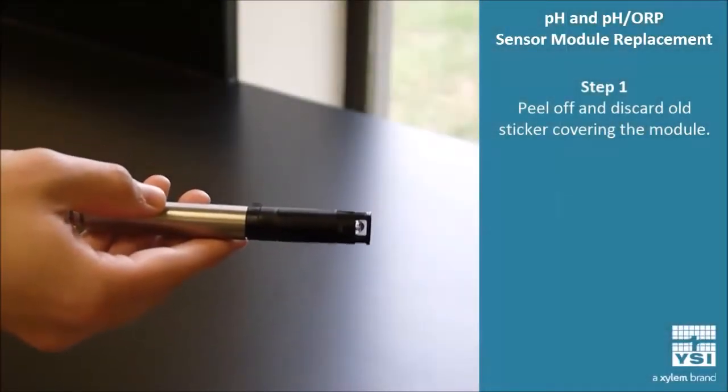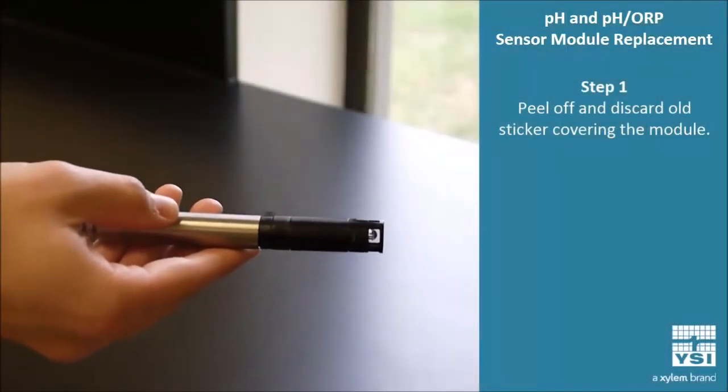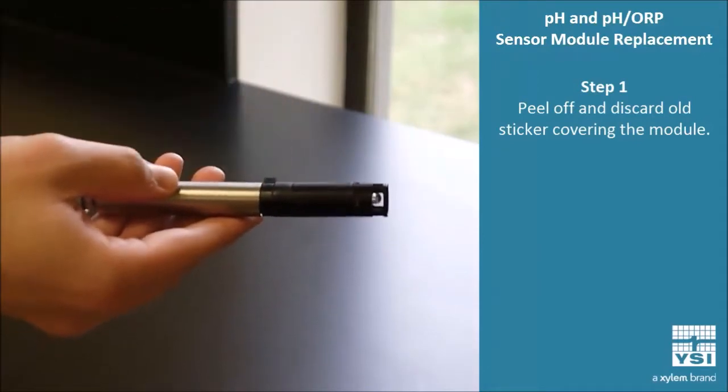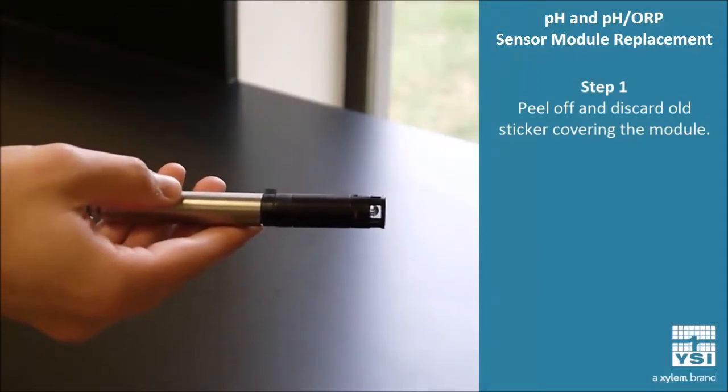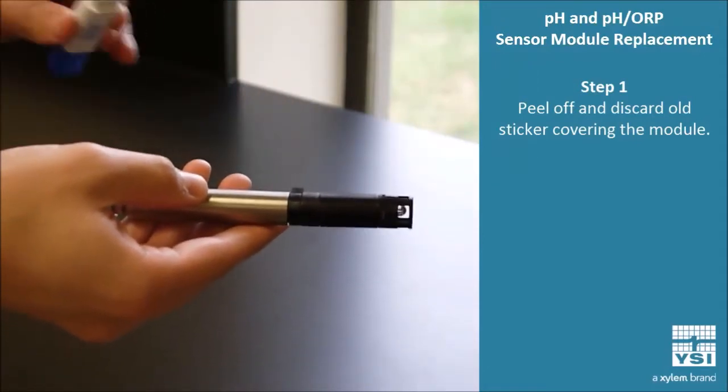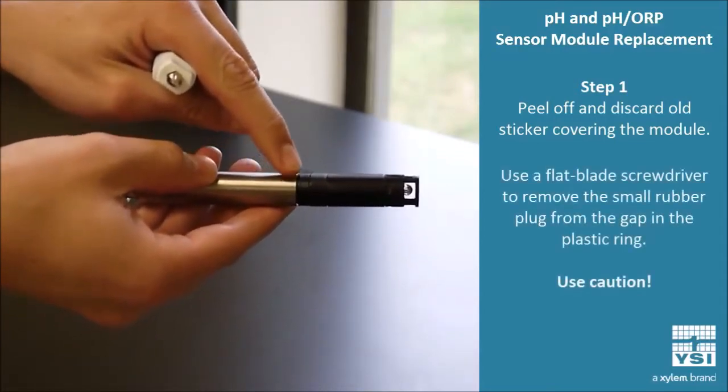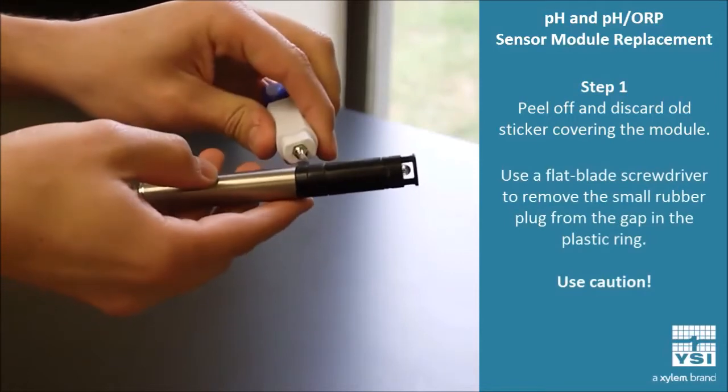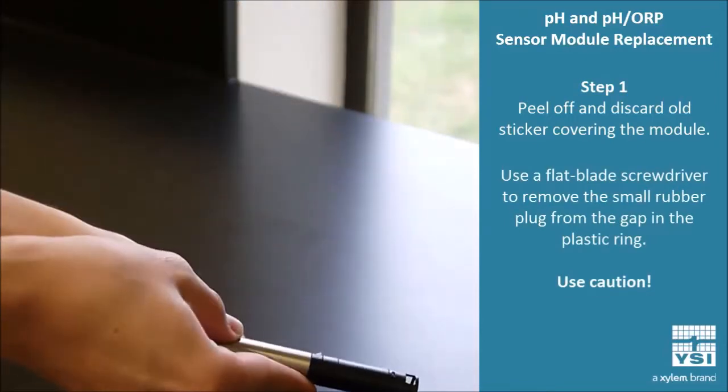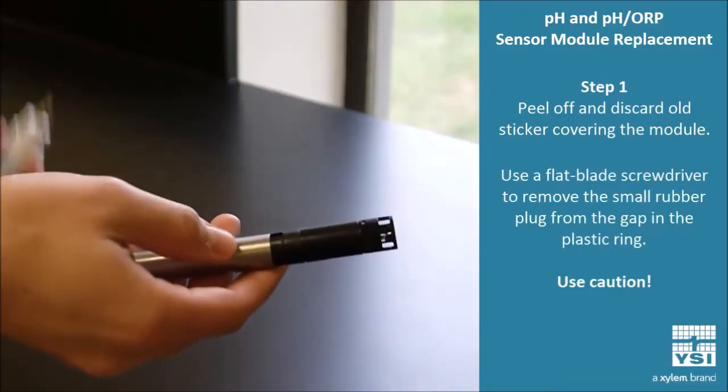The first step is to remove any old stickers that might be around the module, and once that's accomplished, you're going to use a flathead screwdriver to remove a small square plug in this first initial ring. Just dig in there. Be careful, though. Don't injure yourself.